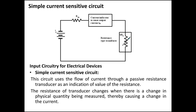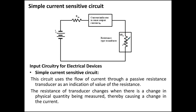This is a simple current sensitive circuit used to avoid these problems. There is an input circuitry with all the signal processing stages, a resistance-type transducer, and an output. Using this circuit, you can avoid the temperature changes and all the physical changes in the input quantity being measured.